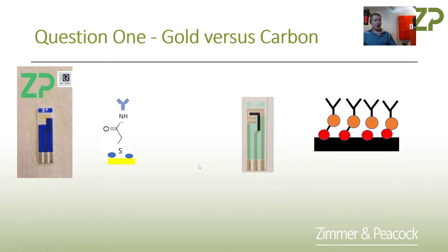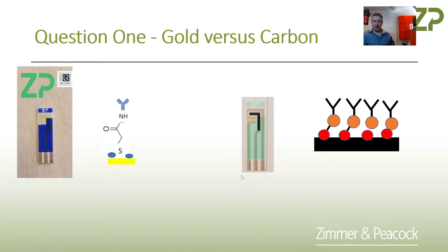Now when we're asked about gold electrodes, 90% of the time people are really trying to make an immunoassay on top of the gold, or they're trying to make a molecular assay on top of the gold. In the case of an immunoassay, they might be putting what we call a thiol linker onto the surface of the gold, activating the other end of the molecule, and then coupling something like an antibody or a single strand of DNA to the molecule.